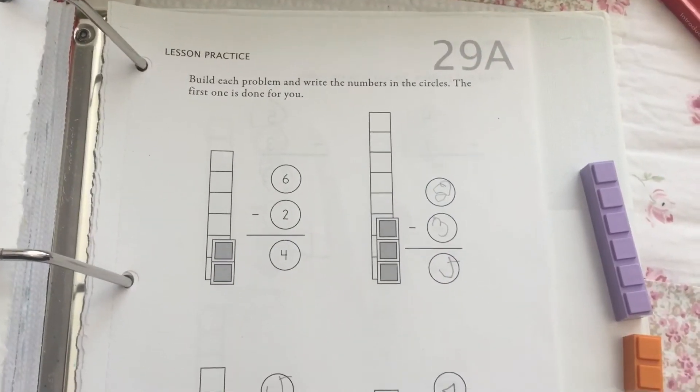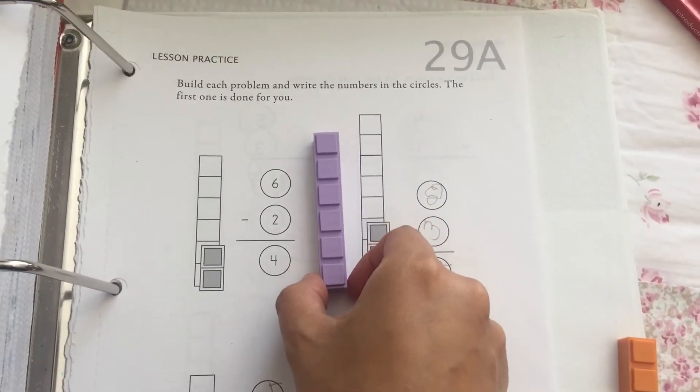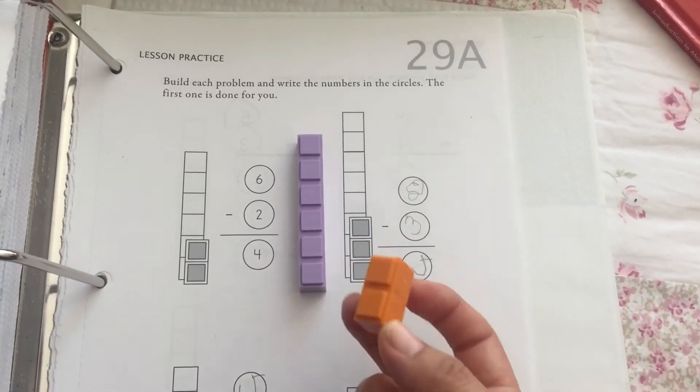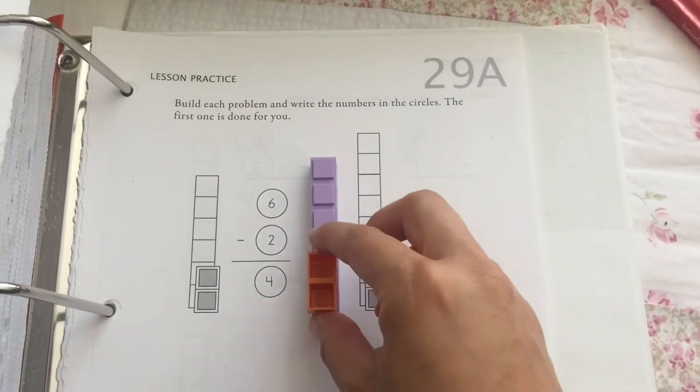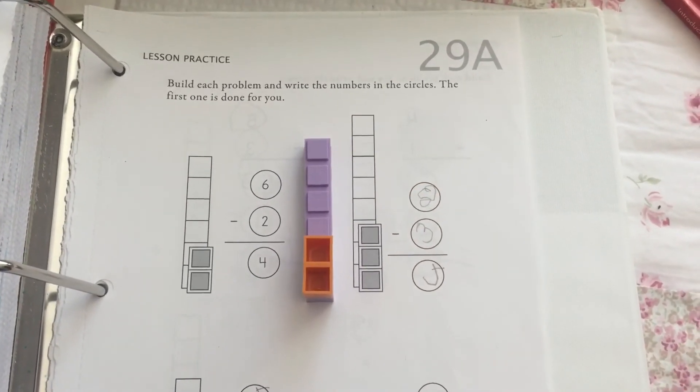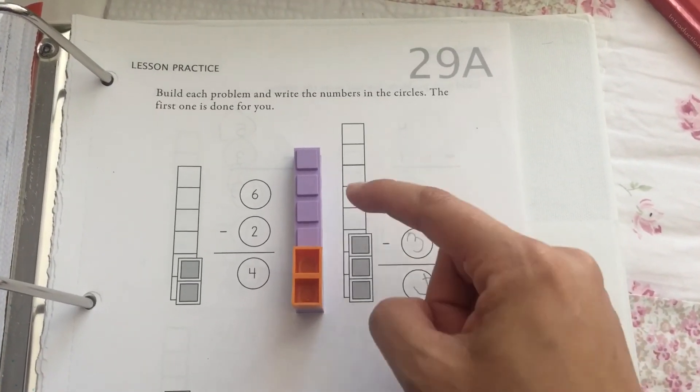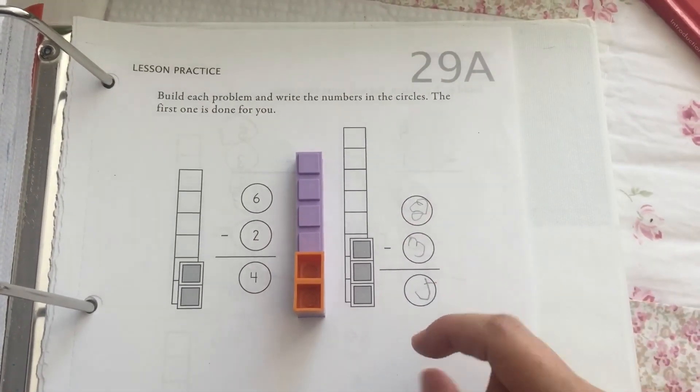For subtraction it's similar. You get your blocks. If you are doing subtraction you turn your blocks over and that means you're taking away. So six take away two is four and then you write your numbers down.